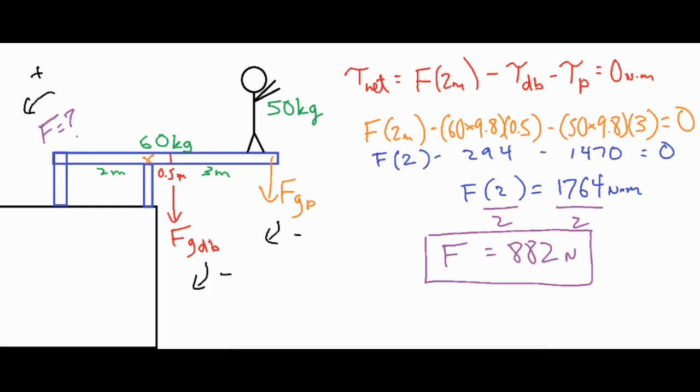And then we set that all equal to 0, so we just found the product of these two and then added them both to the other side which left us with f times 2 equals 1764 newton meters. And then we finish off by dividing both sides by 2 which gave us a force of 882 newtons.